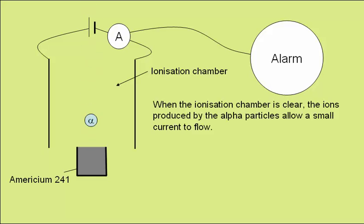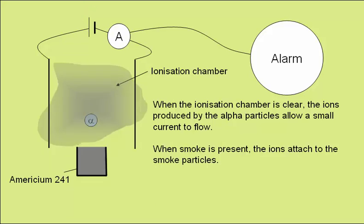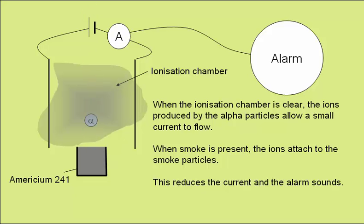When the ionisation chamber is clear, the ions produced by the alpha particles allow a small current to flow around this circuit. When smoke is present, the ions will attach to the smoke particles, reducing the current. This causes the alarm to sound.